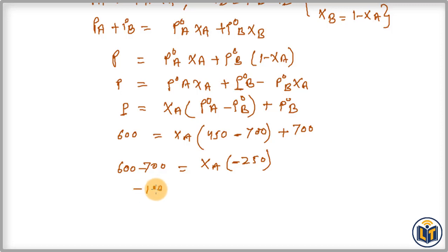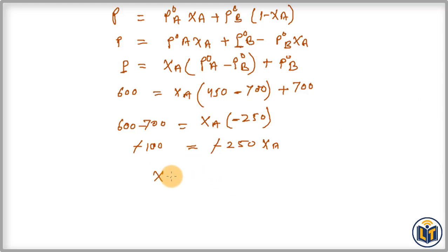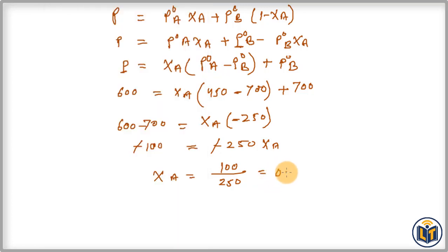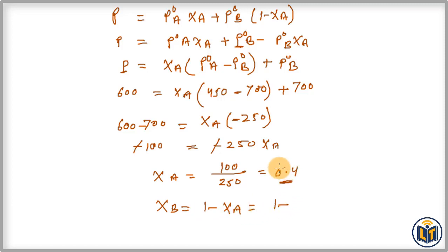Rearranging: 600 − 700 = −250 · XA, so −100 = −250 · XA. The negatives cancel, giving XA = 100/250 = 0.4. This is the mole fraction of component A in the solution. Therefore XB = 1 − 0.4 = 0.6.